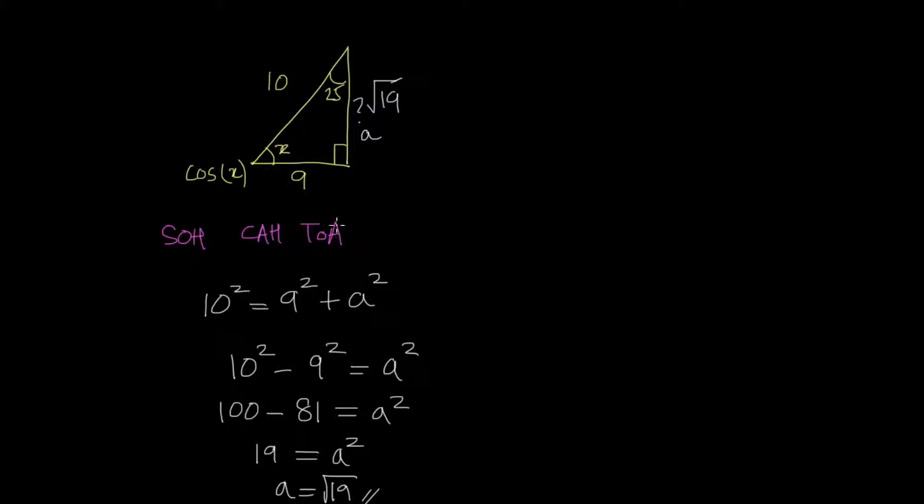Now, to find x, that's fairly simple. We don't need any trigonometric knowledge. We just need to know that the angle sum of a triangle is 180 degrees, which means that the interior angles of a triangle add up to 180 degrees. So we know that 90, plus 25, plus x, must equal 180. So 90 plus 25, that's 115, plus x, must equal 180.